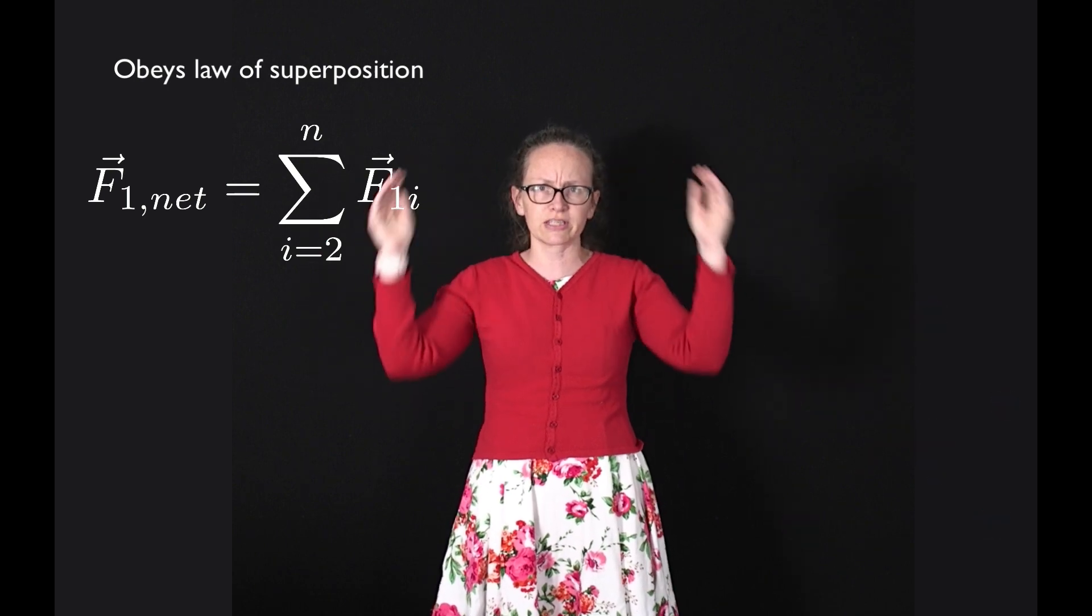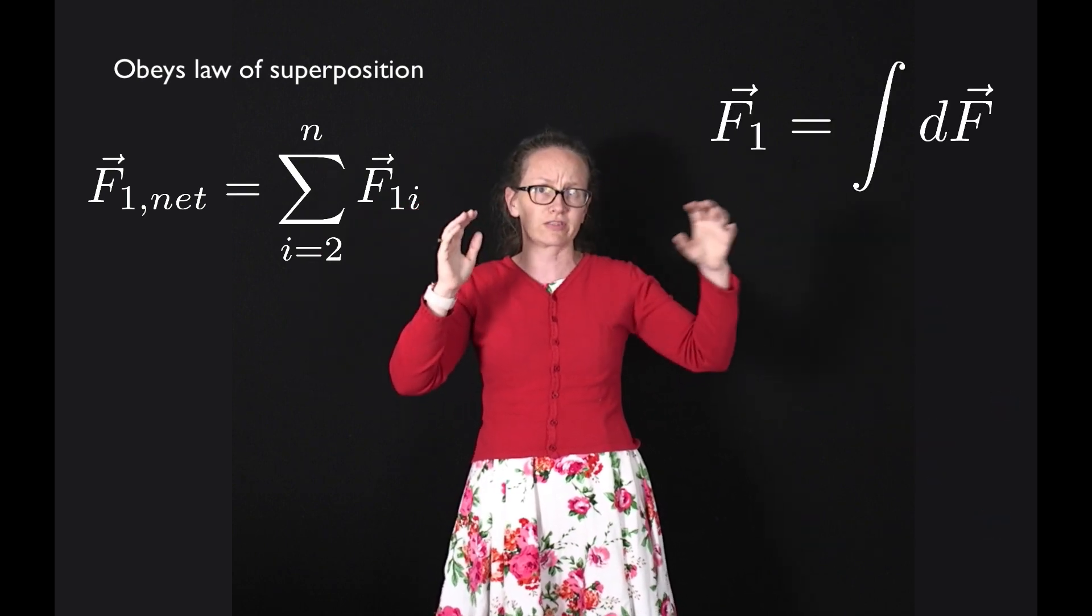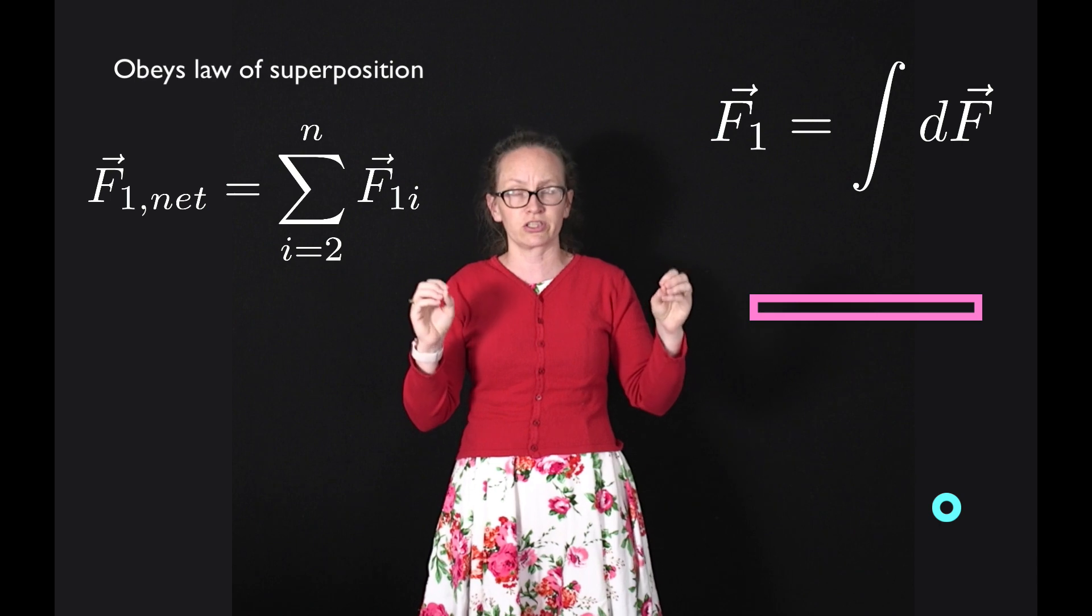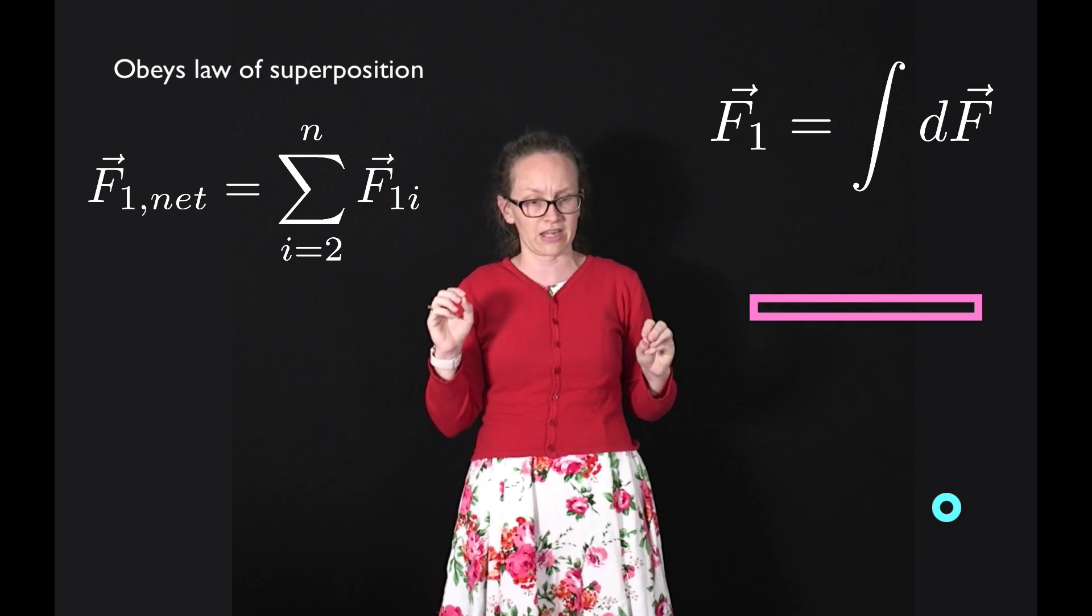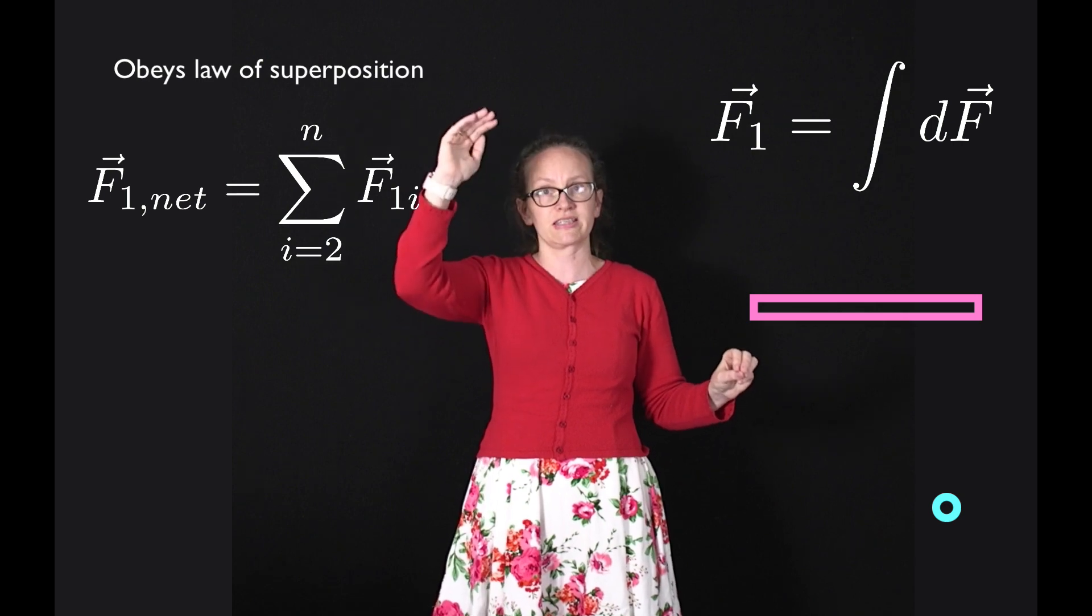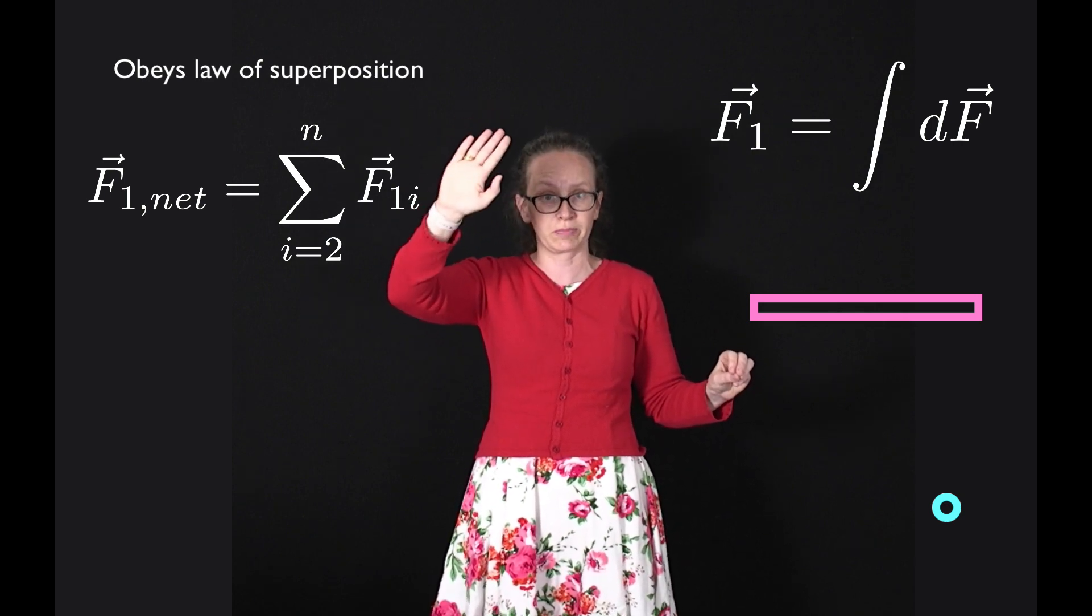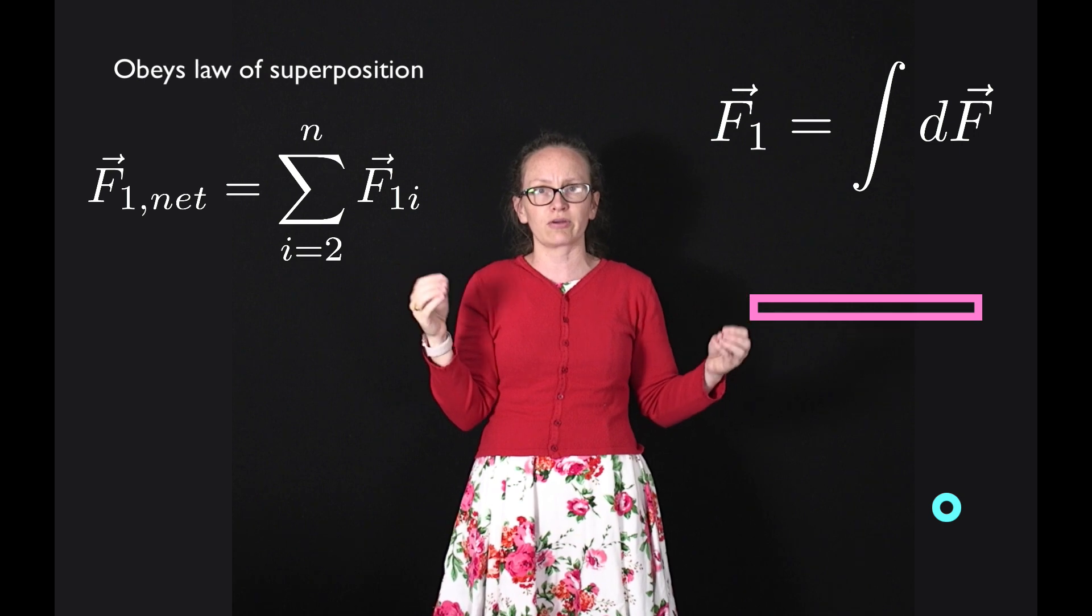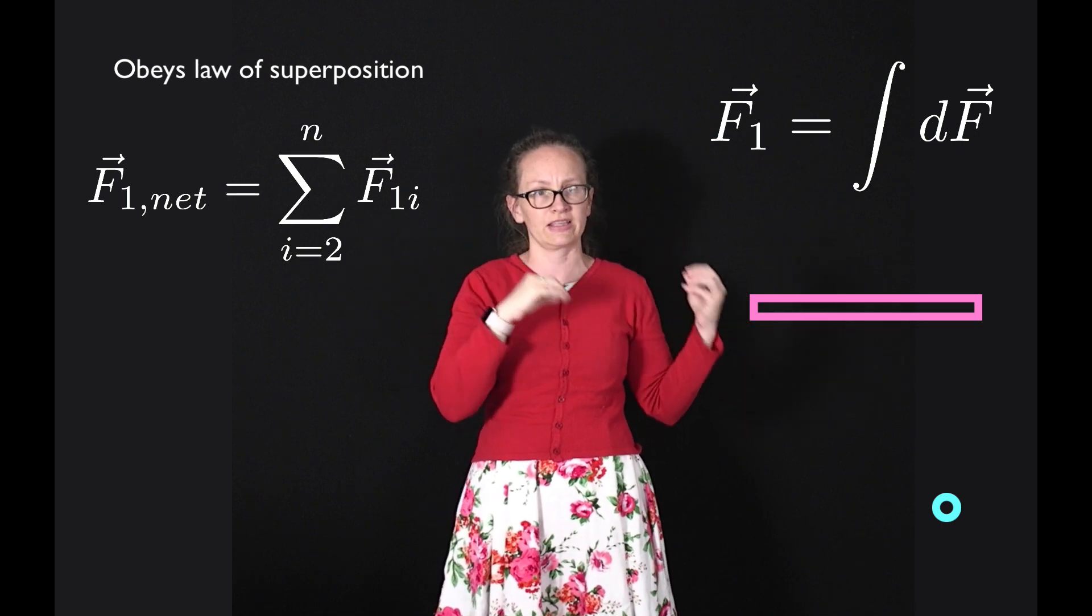If we had a continuous mass distribution instead of a lot of discrete particles, and we wanted to calculate the total gravitational force on a point particle some distance away from this continuous mass distribution, we'd just need to replace our sum with an integral.